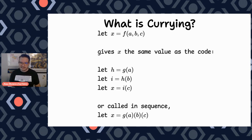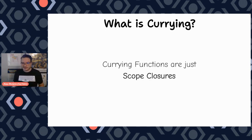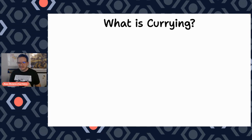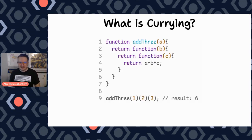In JavaScript though, currying functions ultimately are just scoped closures, which is great. We use closures all over the place, all the time. You probably don't even know that you're using them. But that still doesn't explain how to do it in JavaScript. So let's take a look and see how you do it in JavaScript.